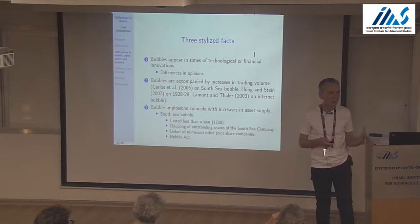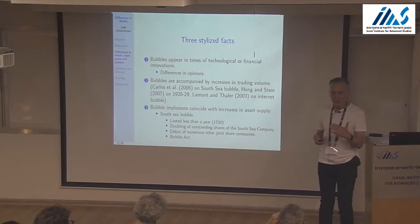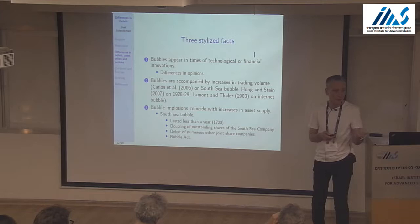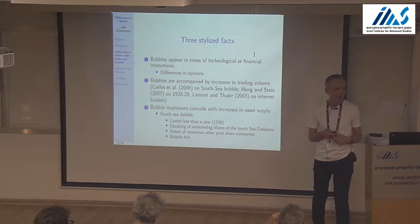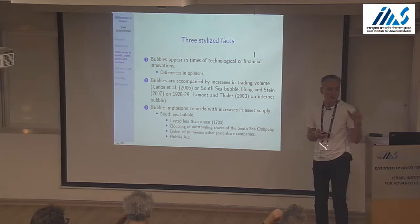The increase in asset supply can come from many different ways. We're going to talk today about the idea of shorting — shorting is like a financial increase in asset supply. If you don't see it, it must mean that it's either very difficult — that's part of the story of The Big Short, how difficult it was to short mortgage-backed securities. But eventually people figured out a way of doing it.